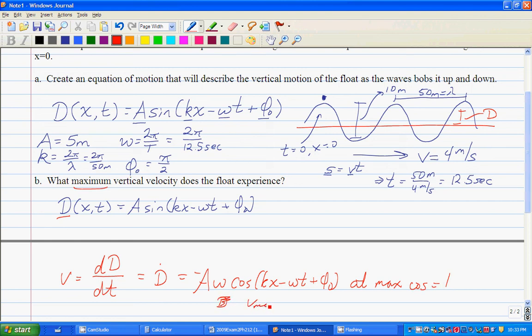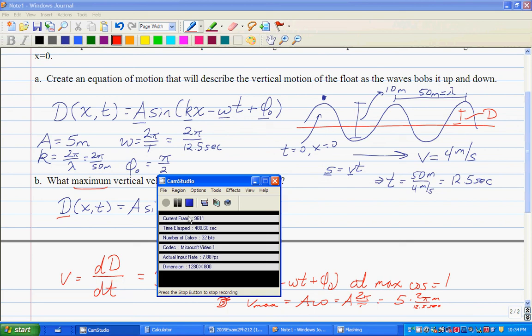So that means that velocity max is going to equal A times omega, where I'm just taking the absolute value because it's asking for the maximum. And then we just plug in numbers from up above. So it would be A times 2 pi over period. Plugging and chugging numbers, it would be 5 meters times 2 pi over the period, which was 12.5 seconds. Cool, okay, I hope that one was fun. Let's stop there and I'll see what else we can do next.